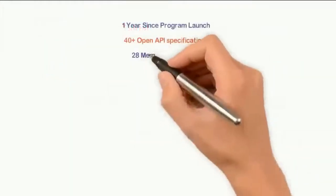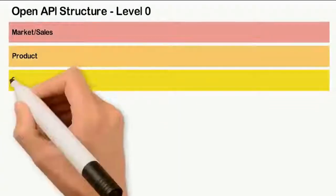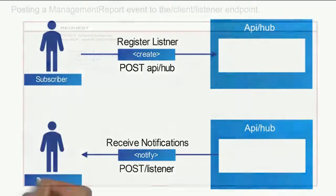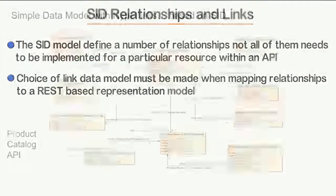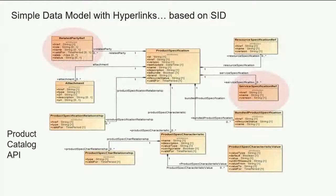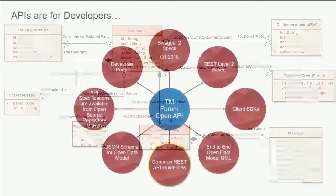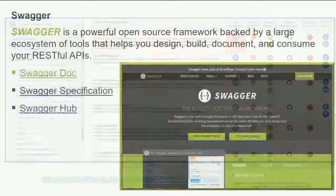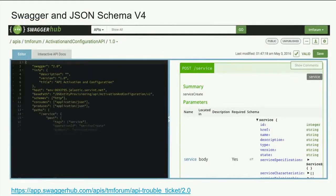This training course will provide all of the information that you need to start using the Forum OpenAPIs. TM Forum's suite of OpenAPIs dramatically improve business and IT agility as well as interoperability. This training course explores how these APIs can be used to unlock a range of growth opportunities for communication service providers, their ecosystem partners and suppliers.